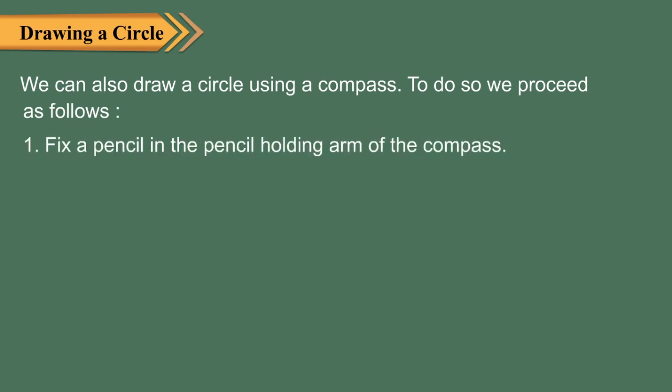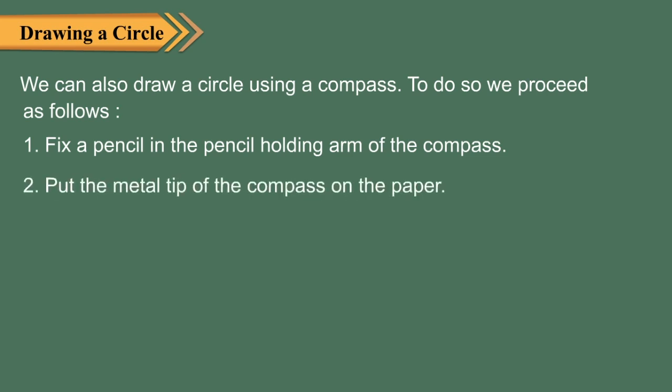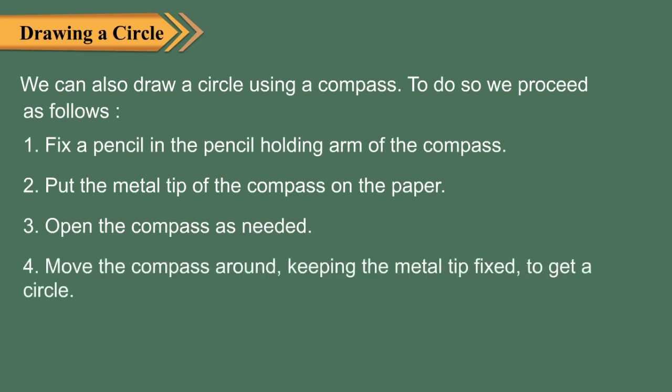To draw a circle using a compass, proceed as follows: one, fix a pencil in the pencil-holding arm of the compass; two, put the metal tip of the compass on the paper; three, open the compass as needed; four, move the compass around keeping the metal tip fixed to get a circle.